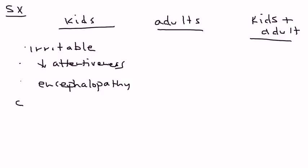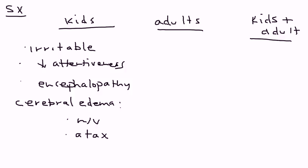Cerebral edema can also occur, and the cerebral edema can cause nausea or vomiting. It can cause the child to have an ataxic gait, and if it progresses, it can cause the child to also develop seizures — so very serious.